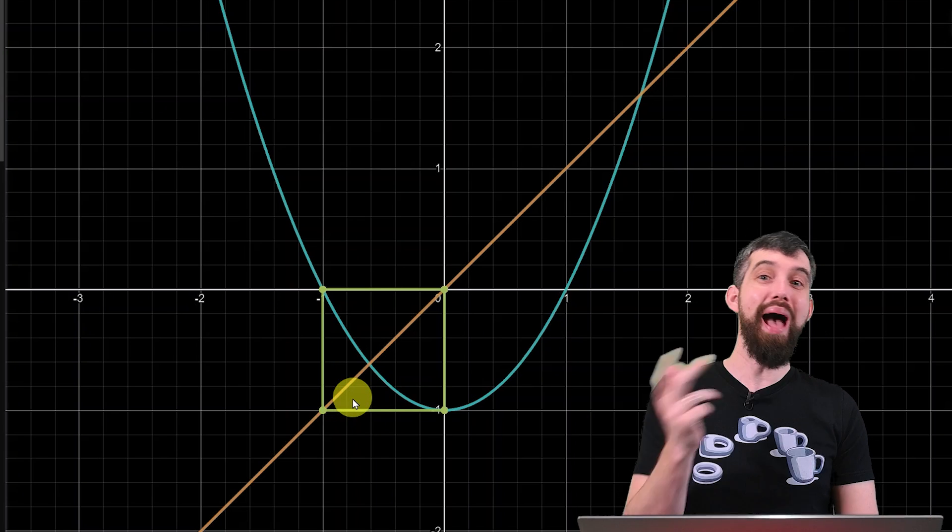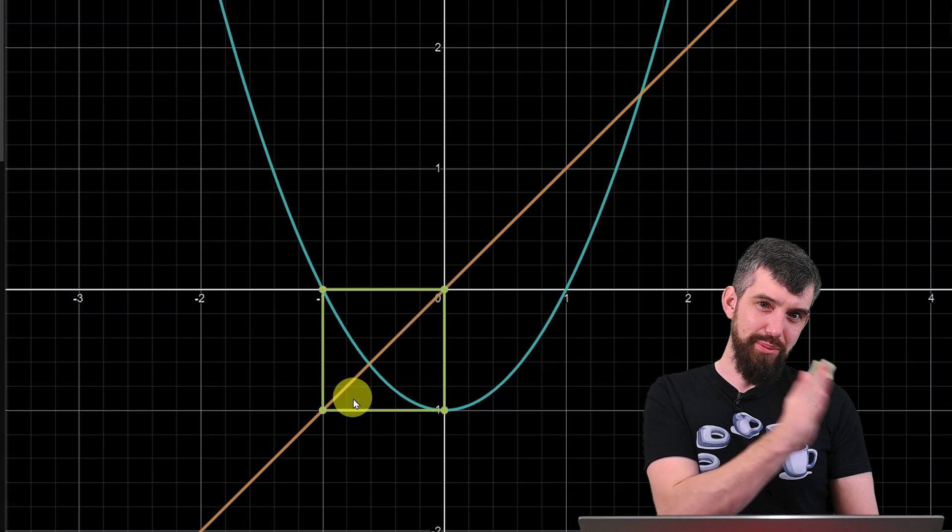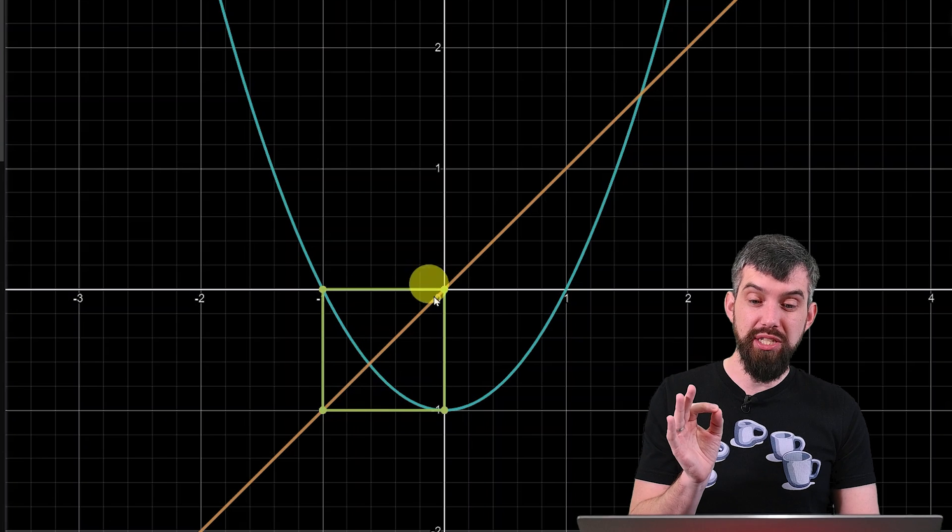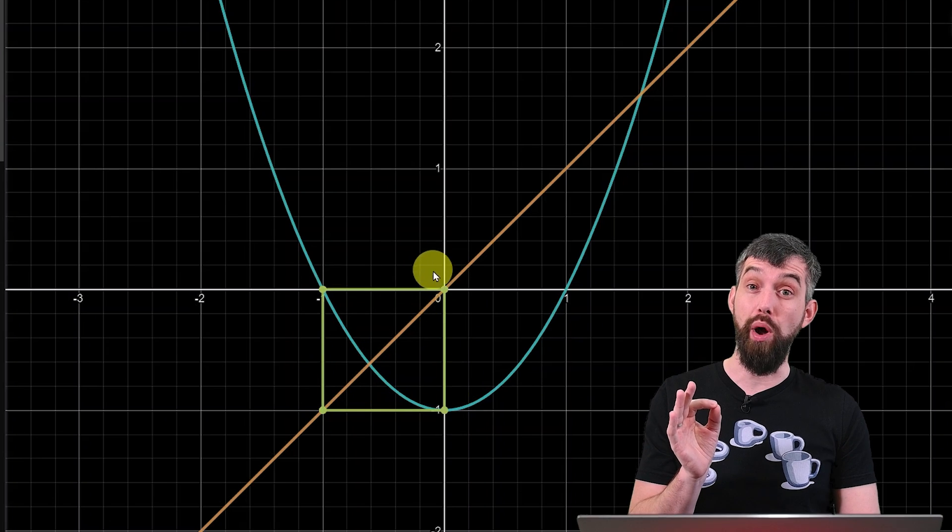You go back and forth forever. A sequence that alternates back and forth between minus 1 and 0 is not convergence. It's a type of divergence. But it's an interesting sequence and it's going to be an important one for us.